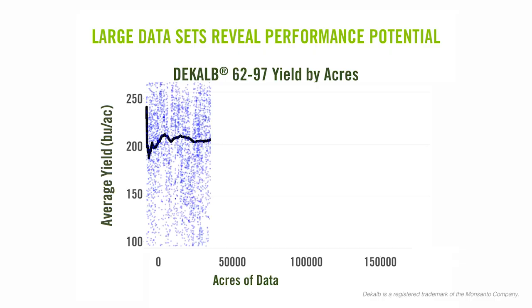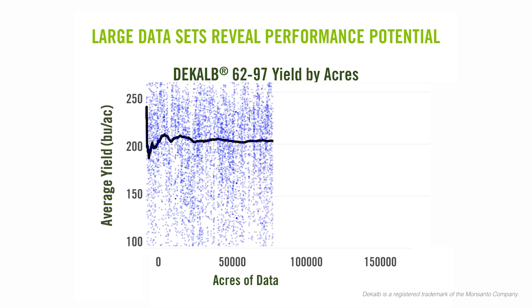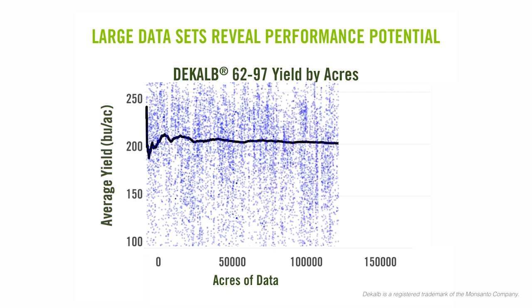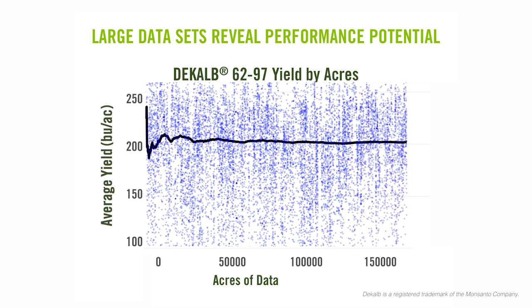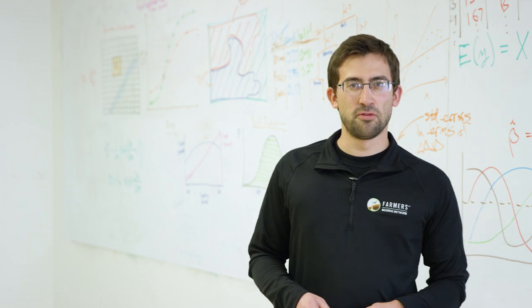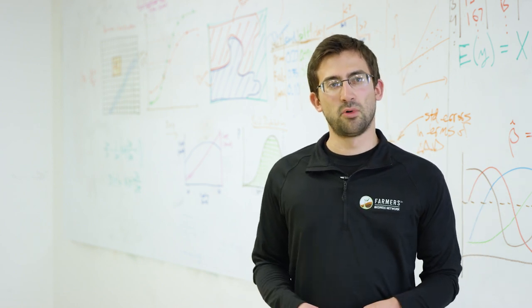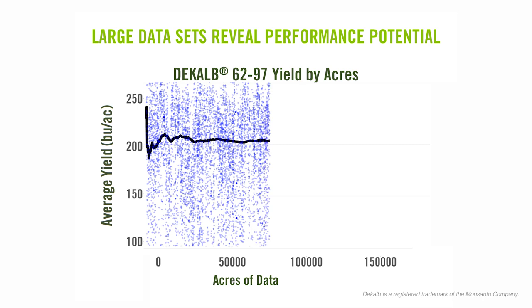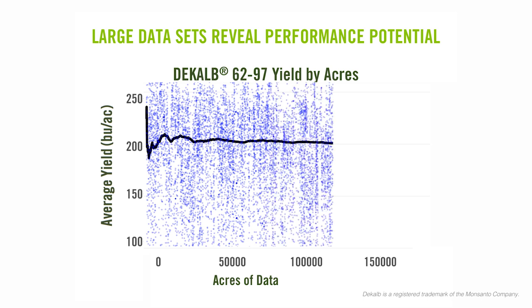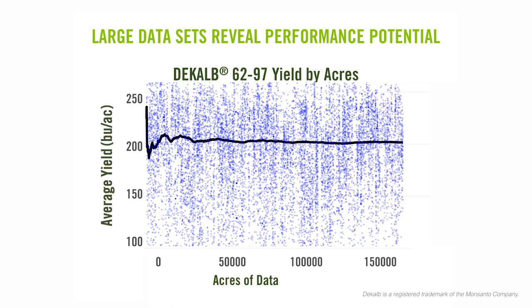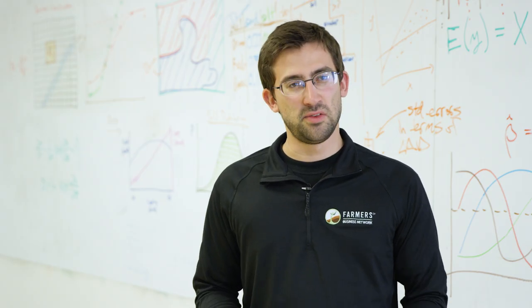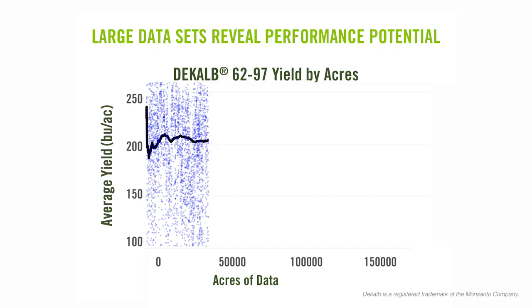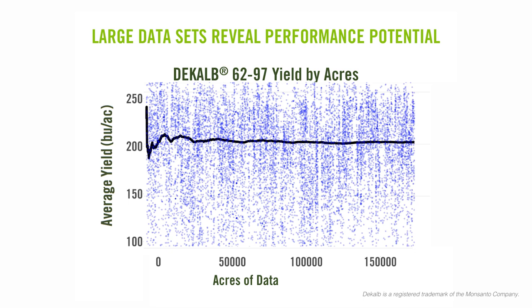We looked at the average yield of DeKalb 62-97, a popular corn variety planted by many US farmers. We looked at individual farmer yields observed over time and the FBN average yield over time as we collected more and more data on that variety. Early on the FBN average was very susceptible to new data coming in, however as we collected more and more data, the average yield quickly stabilized and has become incredibly constant over time — even as we quadrupled the size of the data set. In a large data set, all this random variability has cancelled itself out.